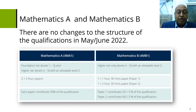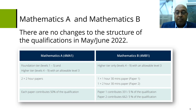There are no changes to the assessment in May-June 2022 for Maths A and Maths B. Maths A is still offered at the higher and foundation tiers, with two papers each, both two hours. Maths B continues to be offered at higher only - one paper of one hour 30 minutes and the other paper two hours and 30 minutes. So there are no changes to the structure.